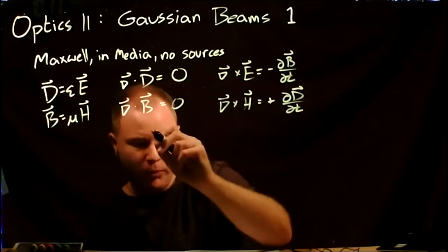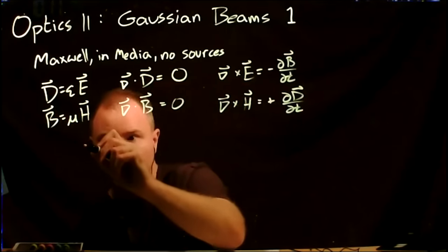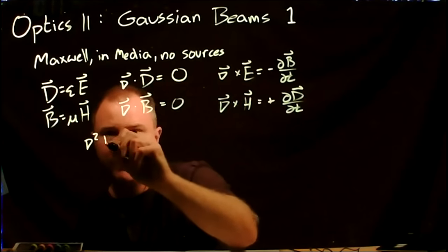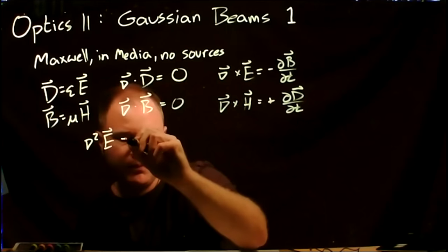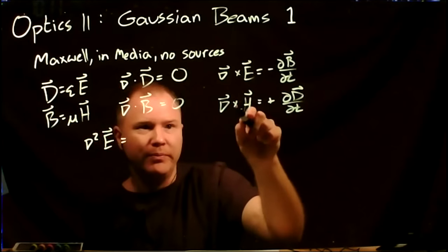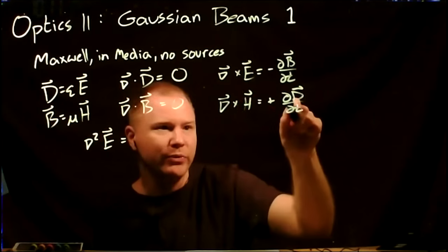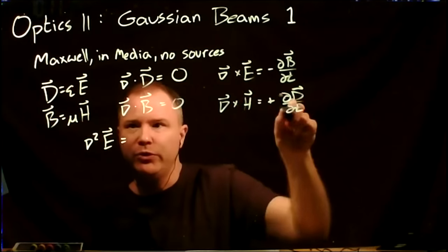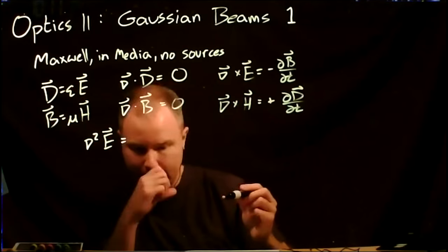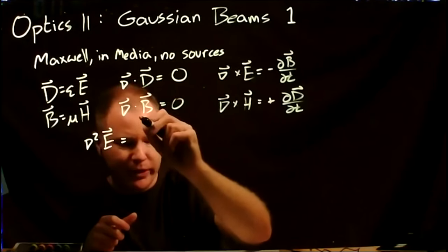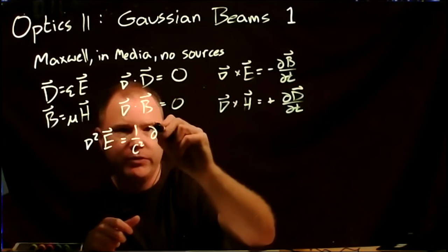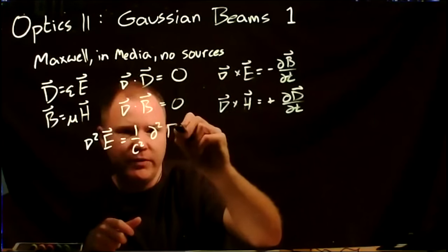All the constants have been absorbed into these definitions. To get the wave equation, we take the curl of Faraday's law: the curl of curl of E equals −∂/∂t(curl of B). Using the definition of B and Ampere's law, curl of B relates to the time derivative of D, and D relates to E. The result is the wave equation: the Laplacian of E equals (1/c²) × ∂²E/∂t².